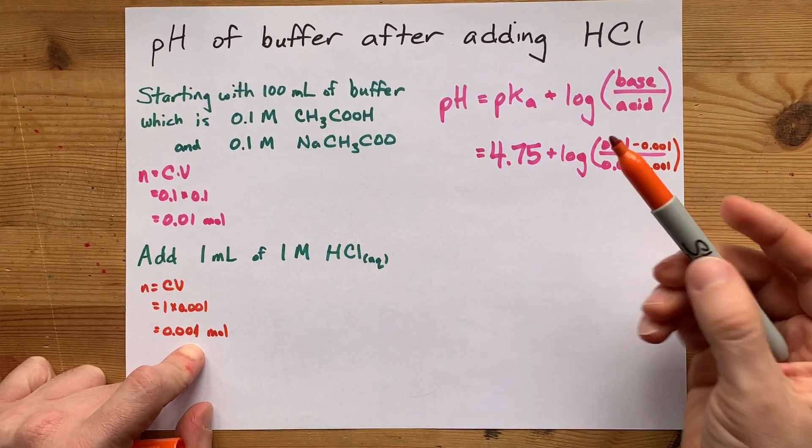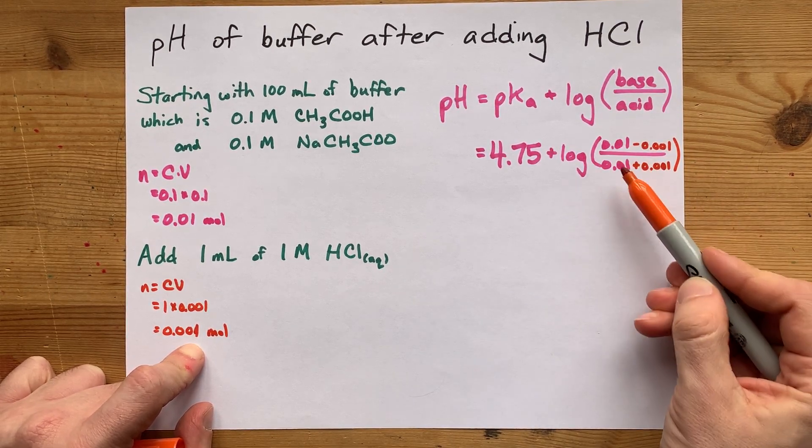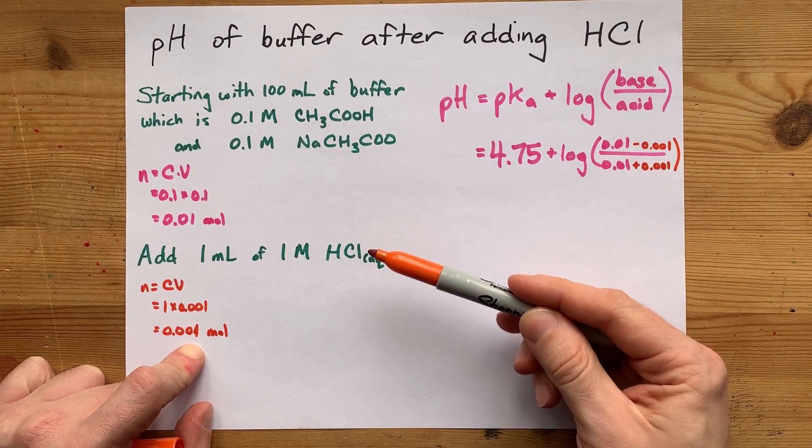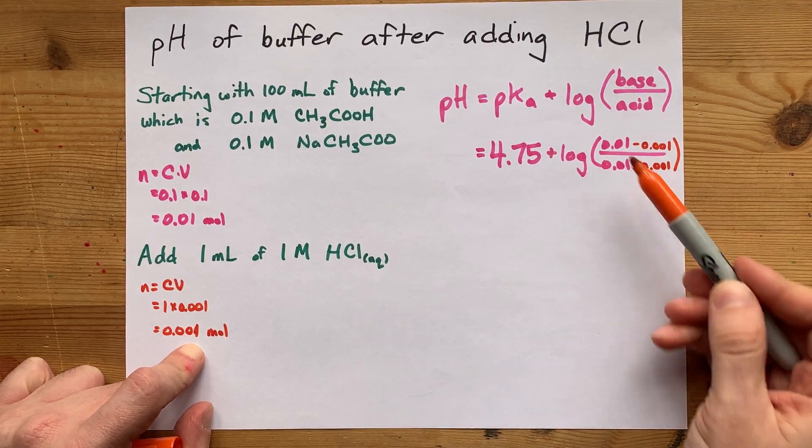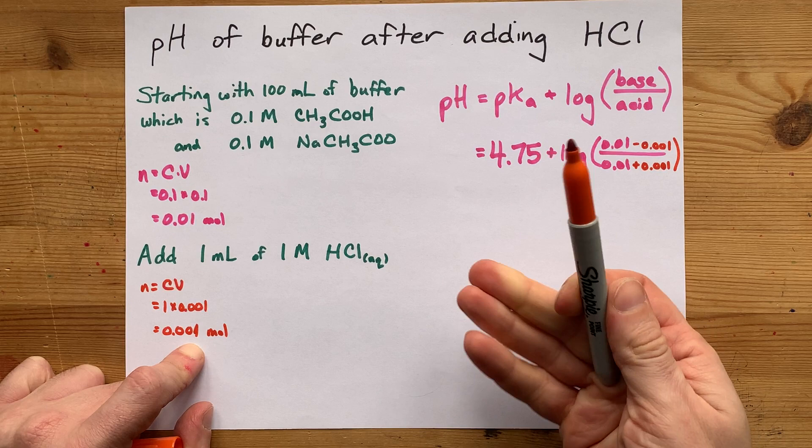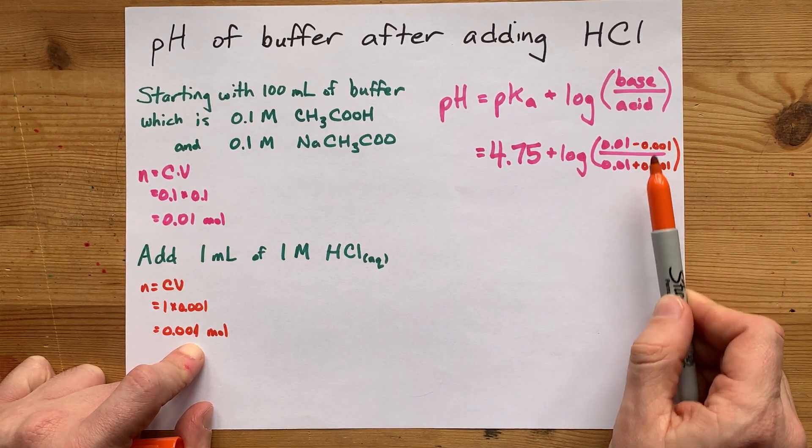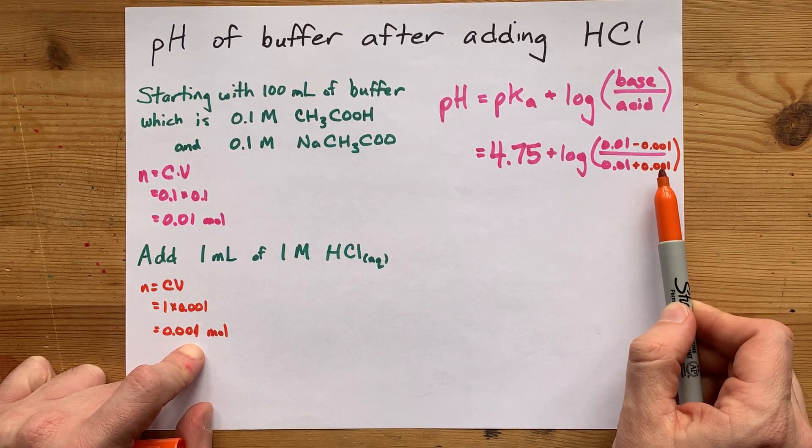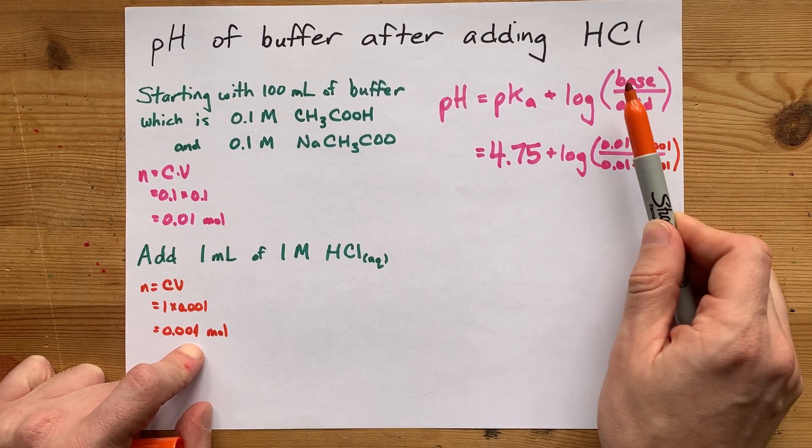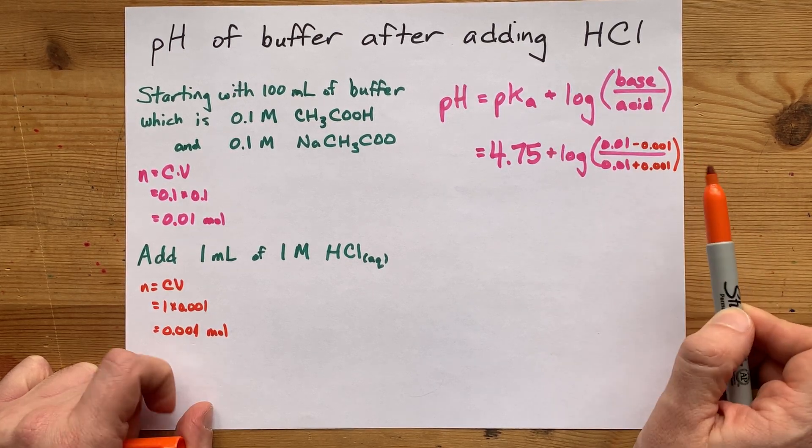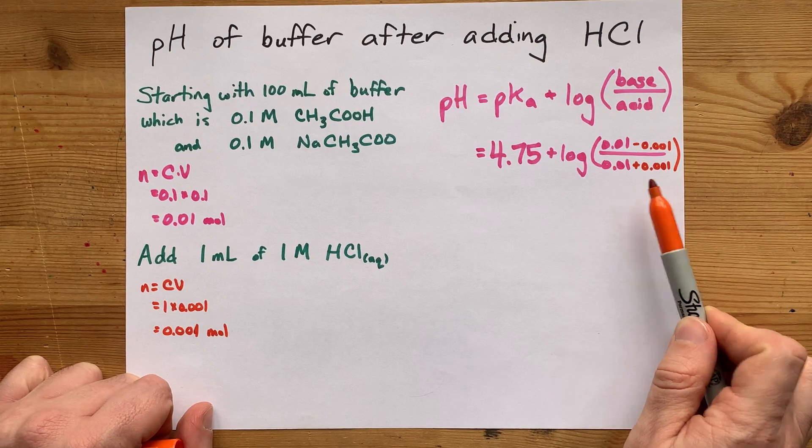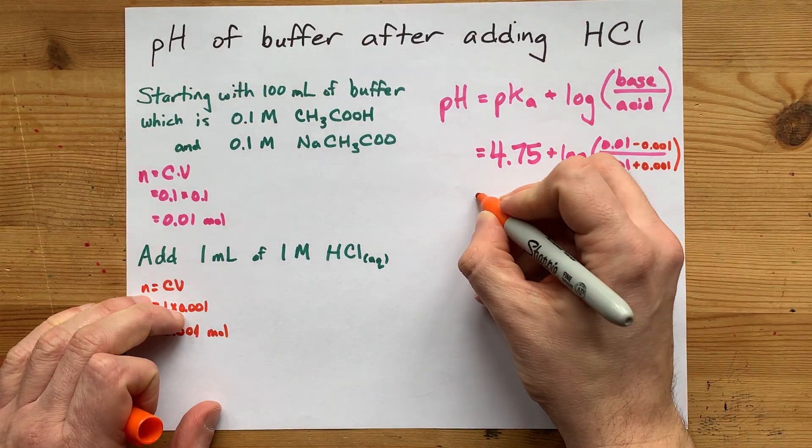Does that make sense? You have your starting amount of base, your starting amount of acid, and when you add some strong acid you take away from the base because you're neutralizing it and you're creating the conjugate acid in the process. So the base concentration or number of moles goes down while the acid concentration or number of moles goes up.